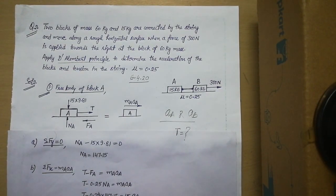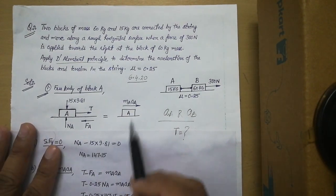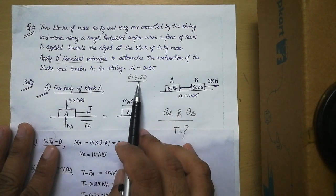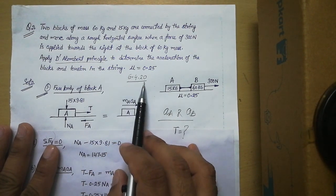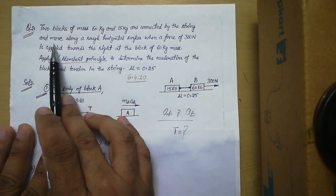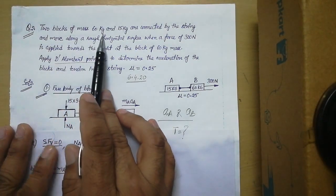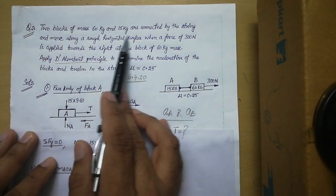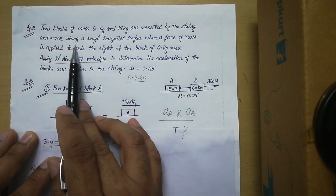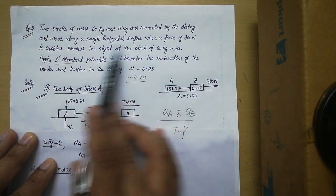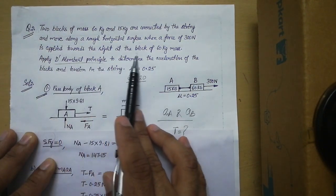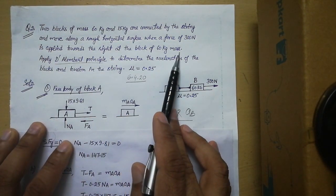Hello students, today in this particular video I will discuss the second numerical of file 6.4.20. Let us read the statement: two blocks of mass 60 kg and 15 kg are connected by a string and move along a rough horizontal surface when a force of 300 N is applied towards the right at the block of 60 kg mass.